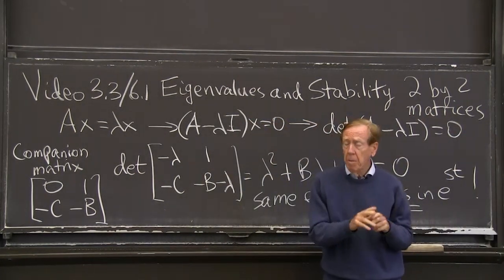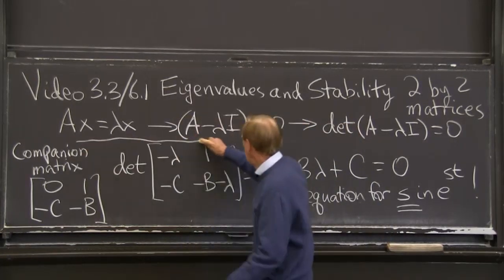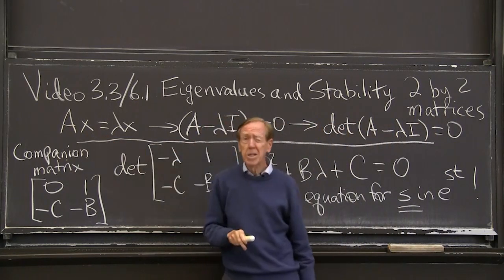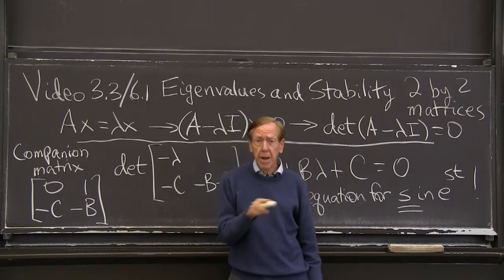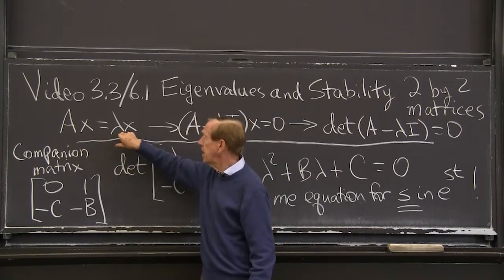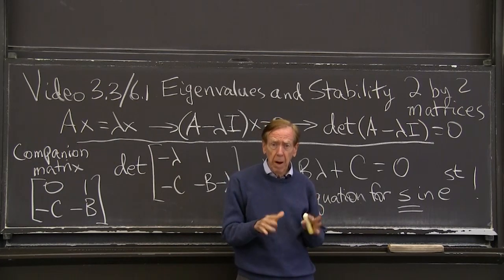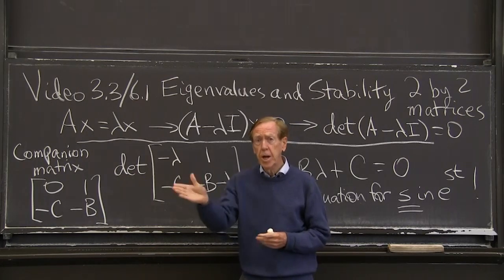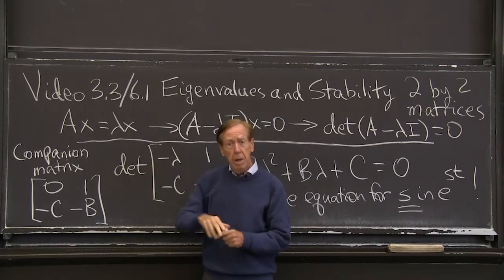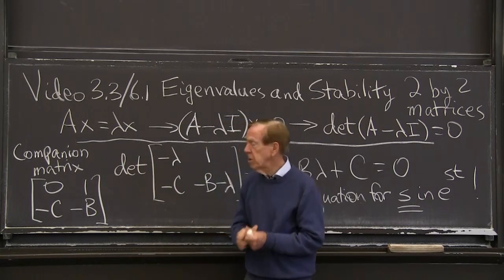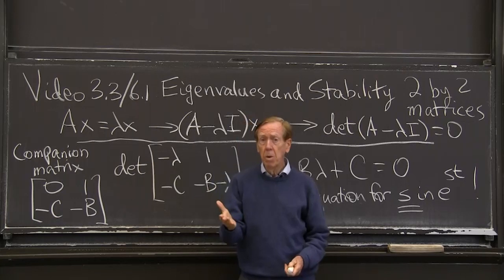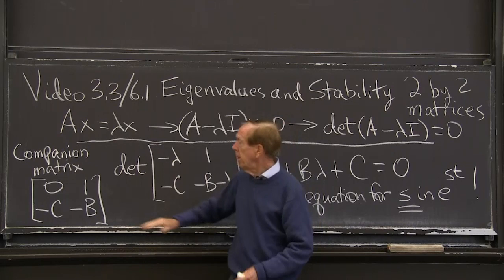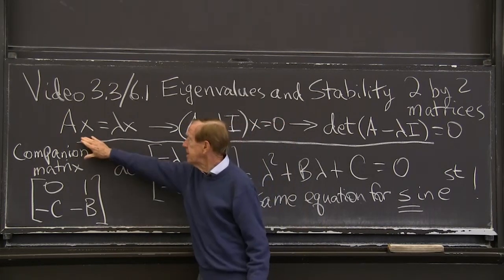Let me remember the basic dogma of eigenvalues and eigenvectors. We're looking for a vector x and a number lambda, the eigenvalue, so that Ax = λx. In other words, when I multiply by A, that special vector x does not change direction — it just changes length by a factor lambda, which could be positive, zero, negative, or a complex number. So that's the key equation.